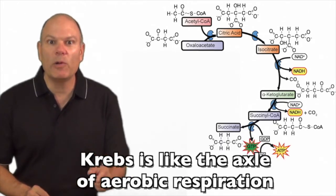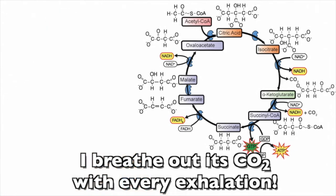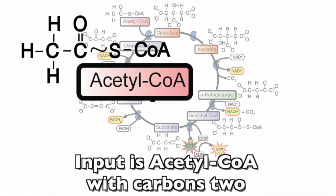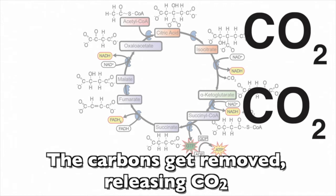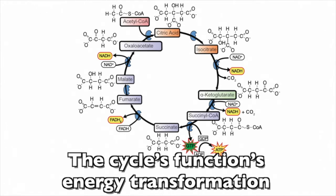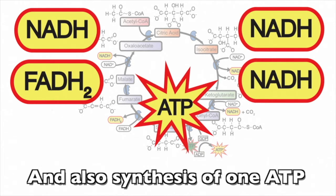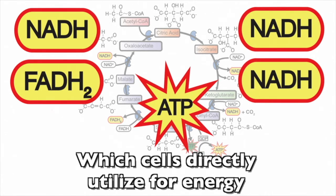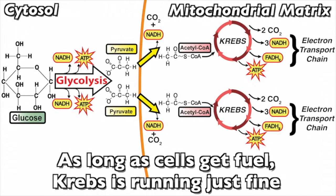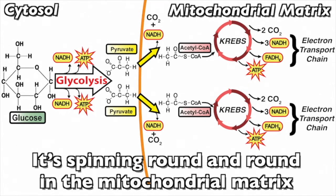Song ending: We've harvested what energy came in at Krebs to start, now we have oxaloacetate at this final part. Oxaloacetate is the commencement and finale, ready to move acetyl-CoA in at the final tally. Krebs goes round and round with such an ancient cycle, spinning like the wheels of my bicycle. Krebs is like the axle of aerobic respiration. Input is acetyl-CoA with two carbons; the carbons get removed releasing CO2. The cycle runs two times per glucose.